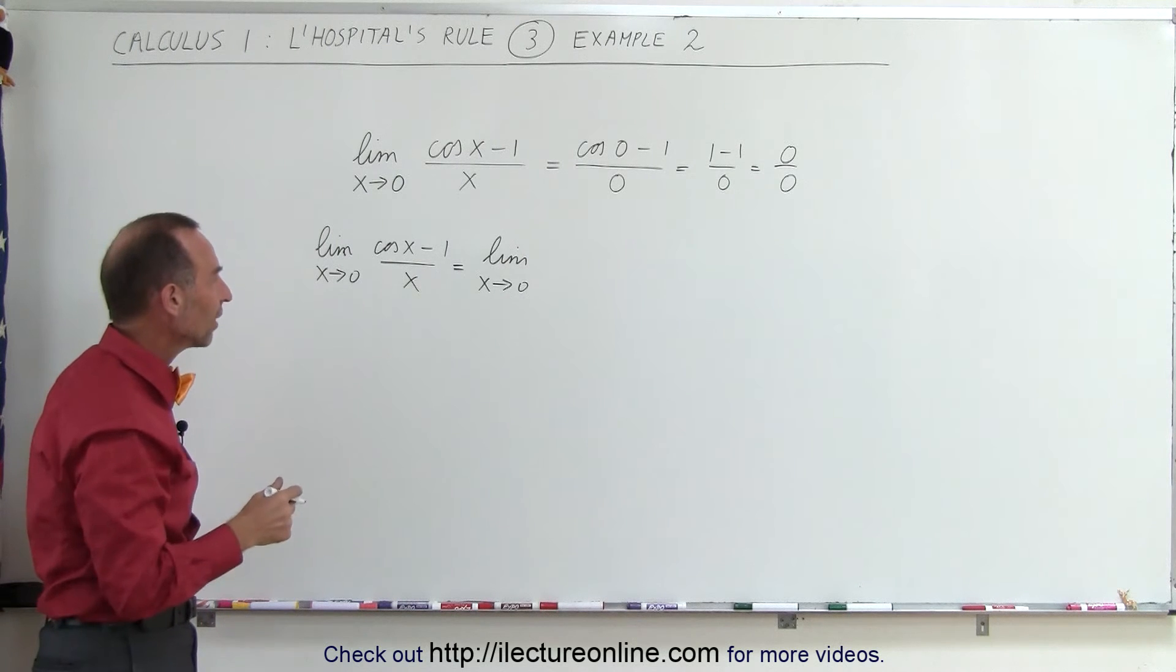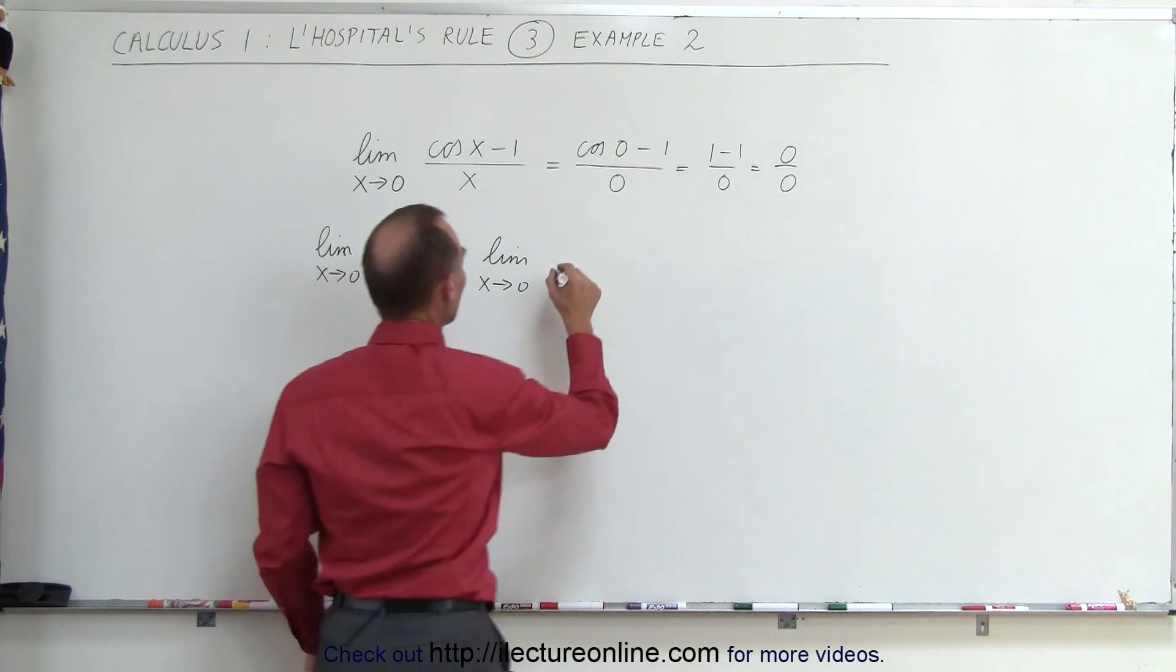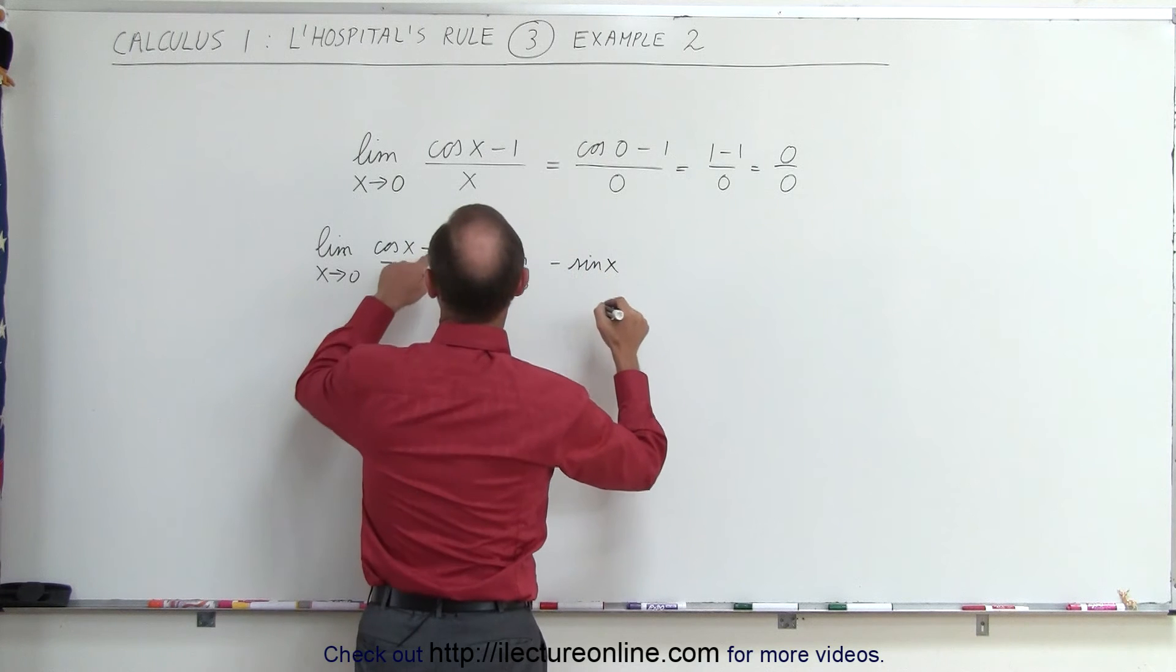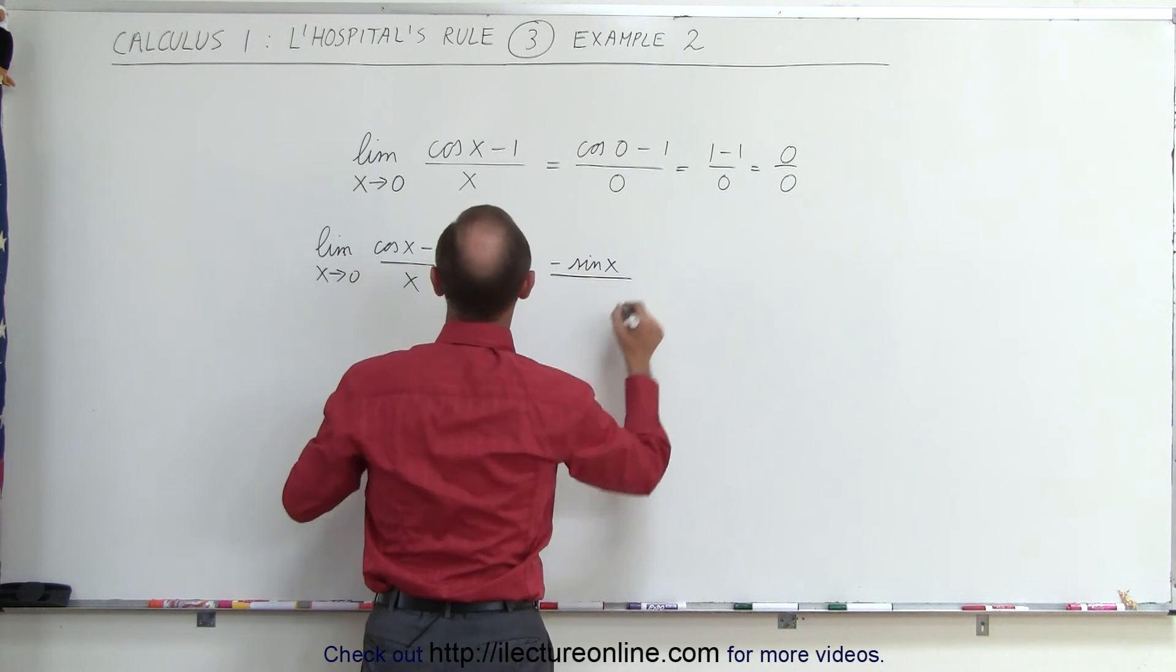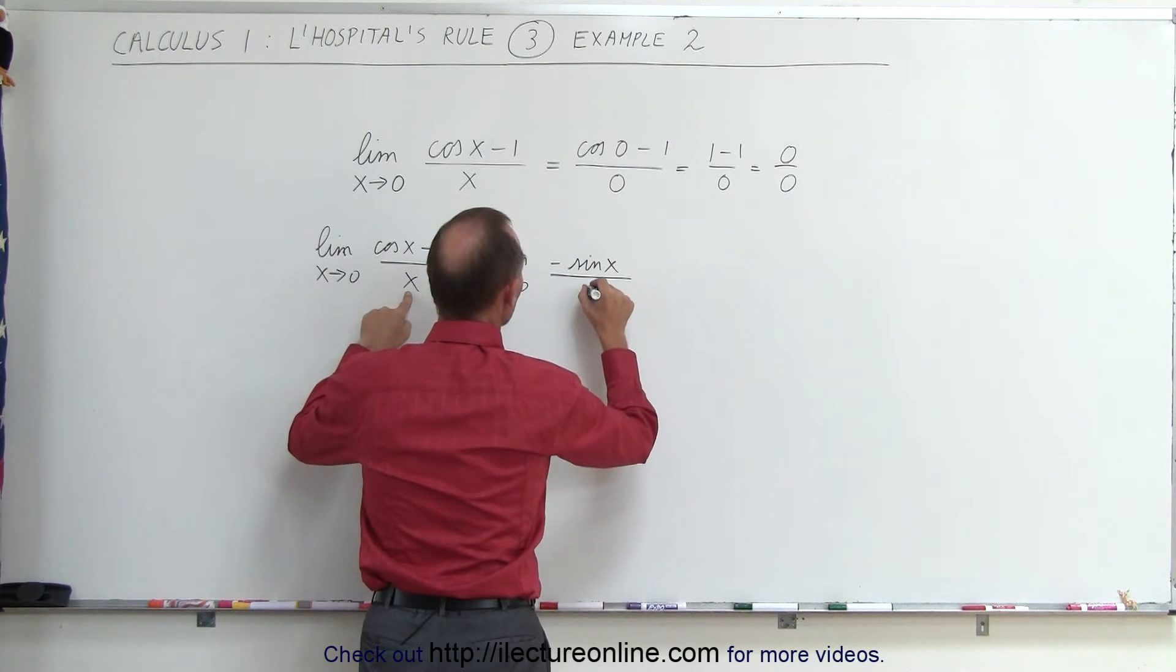So what is the derivative of the cosine? It is the negative sine. So it would be the negative sine of x. The derivative of minus 1 is 0, divided by the derivative of x which would be simply 1.